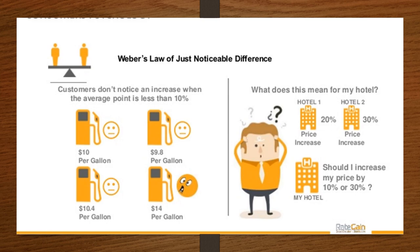Weber describes just noticeable difference, denoted as JND, as the relative difference we are able to distinguish — not the absolute difference between items. Weber's first work with JND had to do with differences in weight. The JND is the minimum amount of difference between two weights necessary to tell them apart.